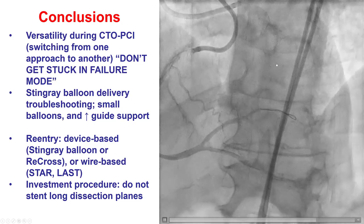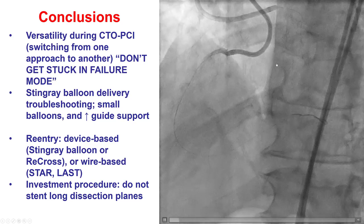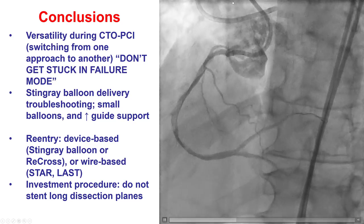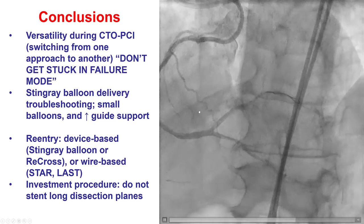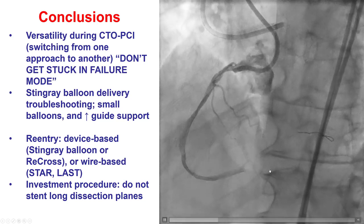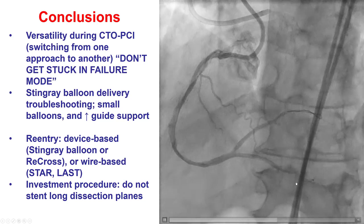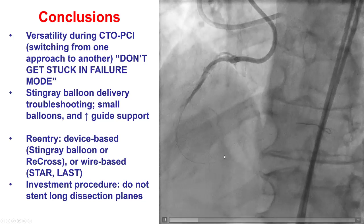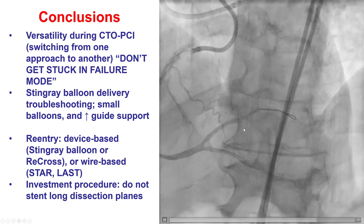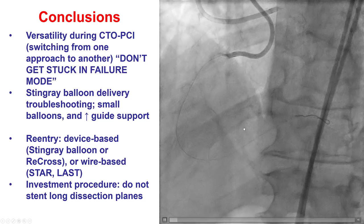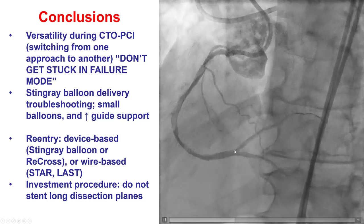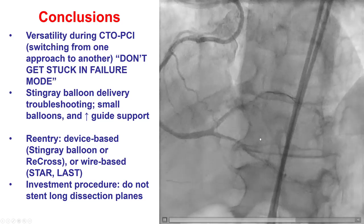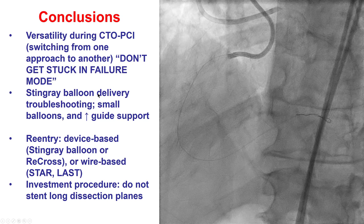This is the final result. We were able to restore antegrade flow in both the posterolateral as well as the right posterior descending artery. However, because we had multiple dissection planes and were uncertain about the point of re-entry, we did not place any stents. This is an example of an investment procedure.